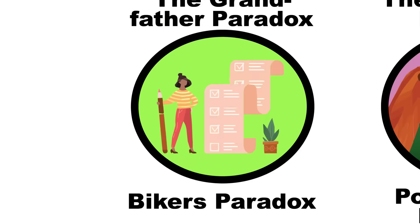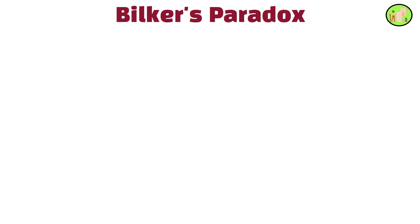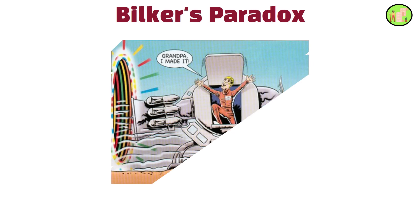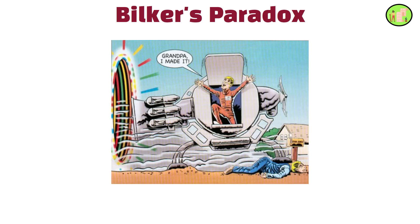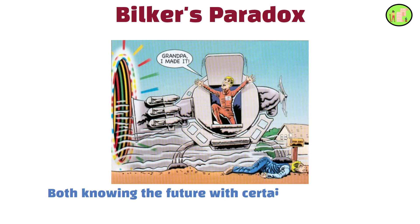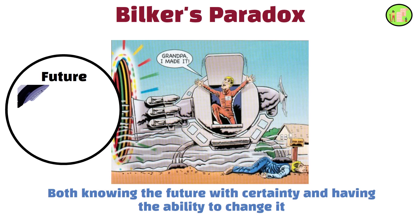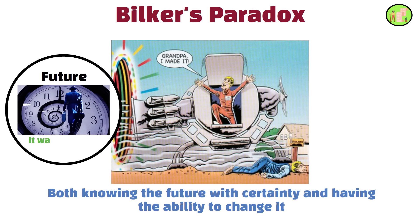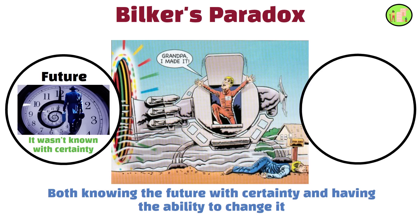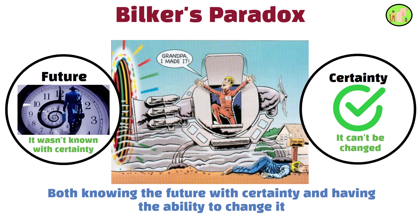Bilker's paradox occurs when a time traveler attempts to bilk or prevent a known future event from happening. The paradox arises from the logical impossibility of both knowing the future with certainty and having the ability to change it. If the future can be changed, then it wasn't known with certainty. If it's known with certainty, it can't be changed.